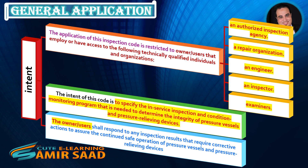Intent: The application of this inspection code is restricted to owner-users that employ or have access to the following technically qualified individuals and organizations: an authorized inspection agency, a repair organization, an engineer, an inspector, and examiners. The intent of this code is to specify the in-service inspection and condition monitoring program needed to determine the integrity of pressure vessels and pressure-relieving devices.